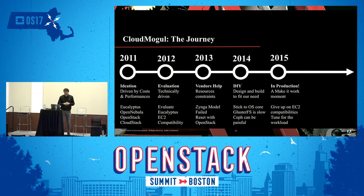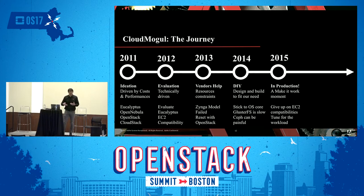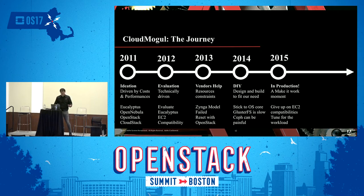In 2015, we got our first production cluster deployed — a make-it-work moment. There were definitely challenges, but at the end we found good success in this deployment. We did have to accept some realities: we totally gave up on EC2 API compatibility. There was no real point for us to do that anymore. Having multiple APIs to deal with is not a big deal — it's easy to automate, to build your tooling. And as the years go on, new tools like Terraform make it even easier.